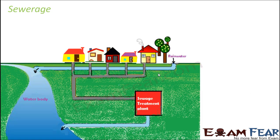Let us look at this picture which will give you a better understanding of how this entire sewerage system works. Here you can see all the different houses, and from every house some sewage will come out — either from their toilets, kitchen sinks, or other sinks inside the house. All this wastewater comes out through pipes, and from all the houses these pipes join to a bigger pipe. These pipes, whether small or big, are called sewers, and this entire infrastructure that helps in transportation of sewage is known as sewerage.